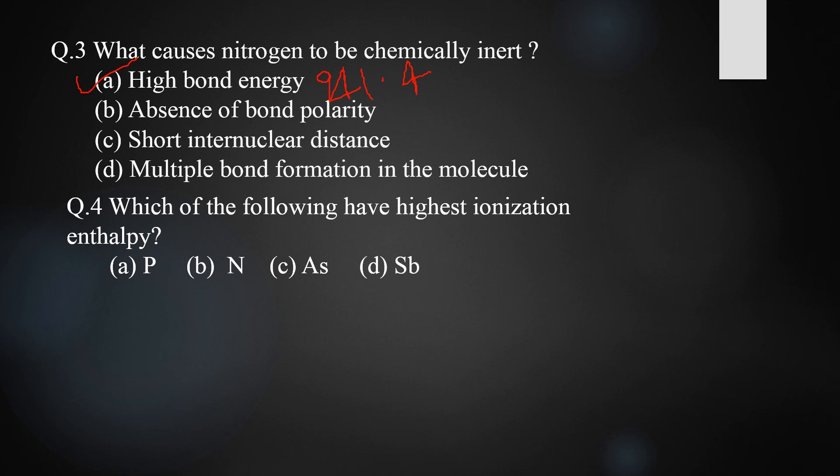Question four: which of the following has the highest ionization enthalpy? Options are phosphorus, nitrogen, arsenic, and antimony. The correct answer is nitrogen. This is due to its smaller size — as we move down the group, the value of ionization enthalpy decreases due to increase in atomic size. Since nitrogen has the smallest size in Group 15, it has the highest ionization enthalpy.